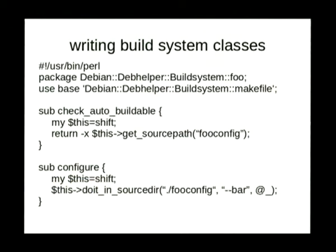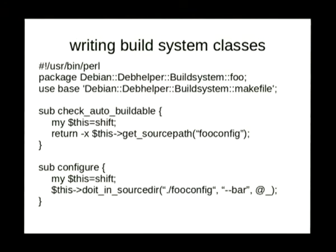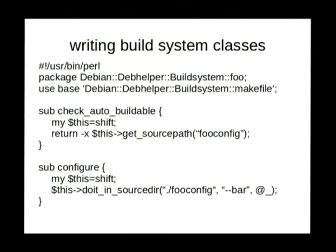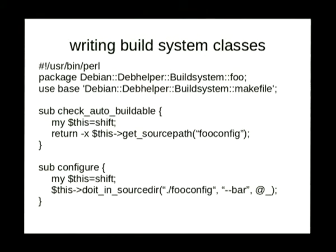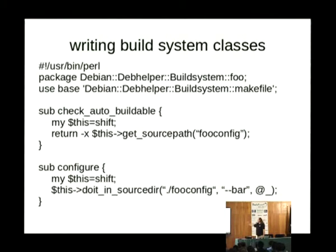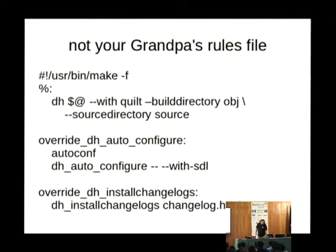DevHelper will not automatically use your build system unless you pass the build-system switch - otherwise somebody could upload a build system that just broke everything. If you want it enabled by default, you have to contribute it. Here's an example of a made-up build system, foo-config. The check_auto_buildable method goes in and checks if there's a foo-config file that's executable. When configuring in dh_auto_configure, it just runs it and passes parameters. For building, cleaning, and testing, it inherits from the makefile class - it builds using the makefile that foo-config presumably creates.